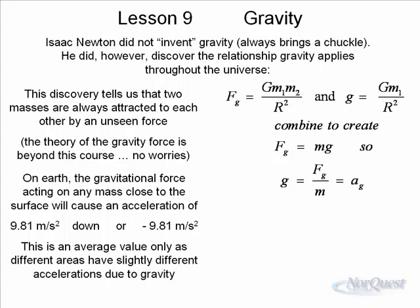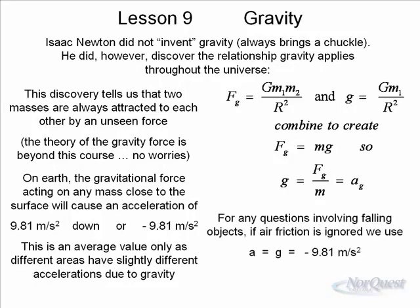Now this is an average value because the Earth is elliptical in shape, and therefore around the equator the acceleration of gravity is different than at the north or south pole. For any questions in North America, most textbooks will use 9.81 as the standard. But just remember, that's an average value used in most textbooks.